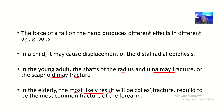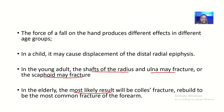In an elderly person, the most likely result will be a Colles' fracture. The hand might be dislocated backward. A Colles' fracture is the most common fracture of the forearm in elderly people.